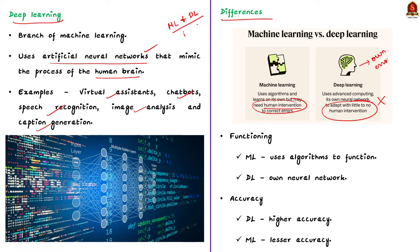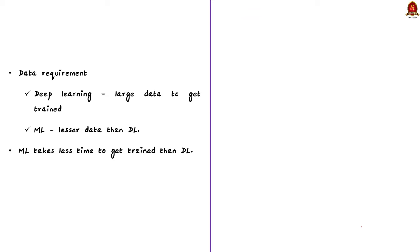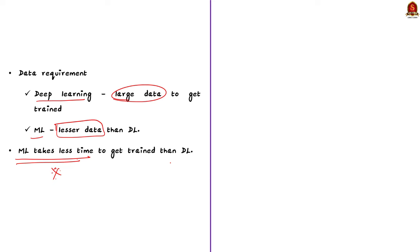Secondly, machine learning uses algorithms to function, while deep learning has its own neural network. Thirdly, deep learning provides higher accuracy, whereas machine learning provides lesser accuracy. Lastly, deep learning requires larger data to get trained, whereas machine learning requires lesser data — which is why machine learning takes less time to get trained than deep learning.